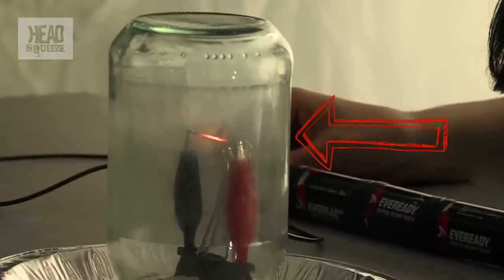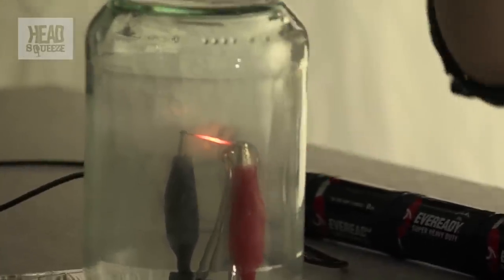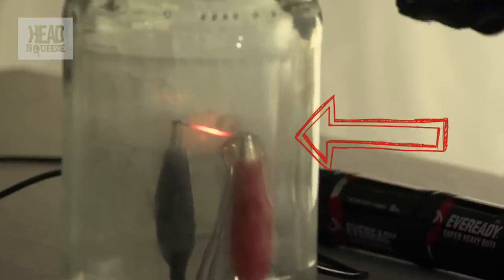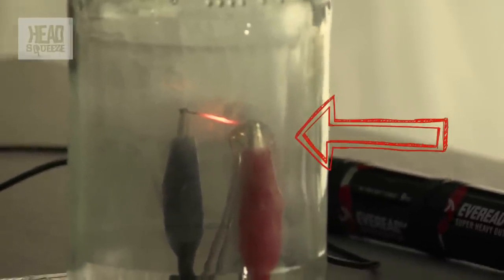Yay! There we go. So you can see that we're making our pencil lead act like the filament of a light bulb. And there you go. A light bulb made with pencil lead.